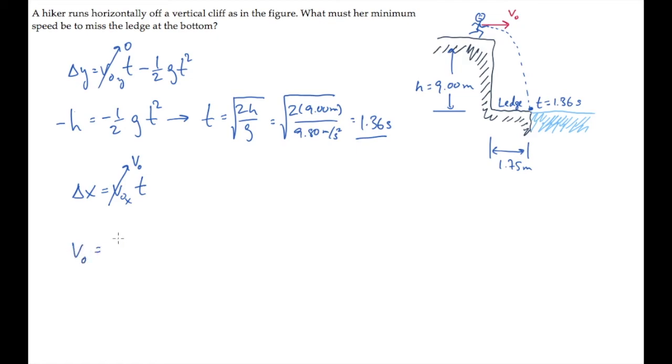Solve this equation for v0. It equals the horizontal displacement, delta x, that's the ledge's width, divided by the time that she spends in the air. Substitute the numbers and calculate to find that she must be running at least 1.29 meters per second to clear the ledge.